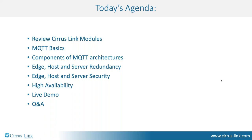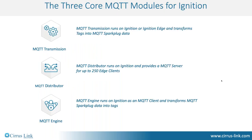I'd like to hand over to Kurt Hokenedle to get us started. In reviewing the modules, we'll start with the three core MQTT modules that run on the Ignition platform. The first one is where the data producers are at the edge — it's called the MQTT Transmission module. Its main purpose is to transform any Ignition tag data into MQTT Sparkplug data.